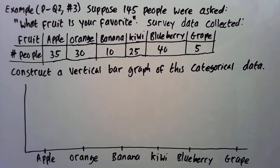Okay, so I put my fruit names on the x-axis. Okay, so apple, orange, banana, kiwi, blueberry, grape.